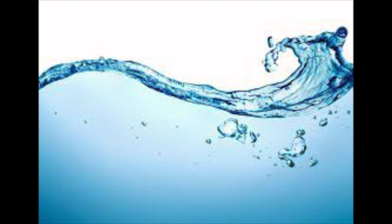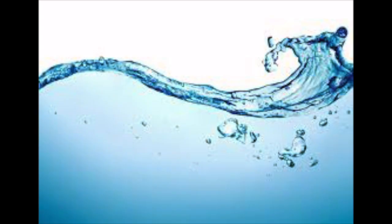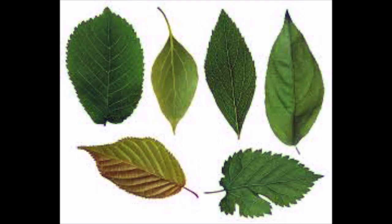The second compound required is water. Plants get the water they need for photosynthesis through their roots. The water then travels up the plant's xylem tubes and reaches the leaves.